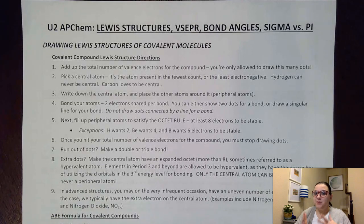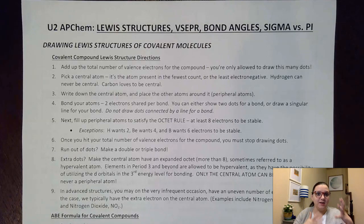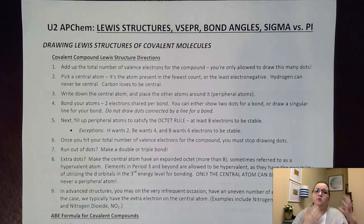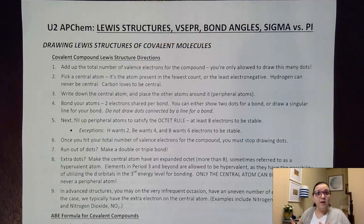We have to remember that the big difference between covalent and ionic is that with ionic compounds we show brackets and charge, and we show electrons being transferred. However, with covalent we want to show electrons being shared.